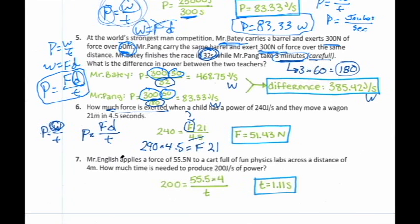And last but not least, Mr. English applies a force of 55.5 newtons to a cart full of fun physics labs across a distance of 4 meters. How much time is needed to produce 200 joules per second of power? So we actually know the power that we're looking for. We want to produce 200 joules per second or 200 watts. We know that Mr. English is exerting a force of 55.5 newtons. So right there, I've got my force, I've got my power. Now I want to be able to figure out my time. Well, I also need to know how far he pushes it, and it does tell us, across a distance of 4 meters. So that 4 meters ends up there, 55.5 times 4. And then we can go ahead and do our division, and we can come up with a time of 1.11 seconds. So 1.1 seconds would also be acceptable.